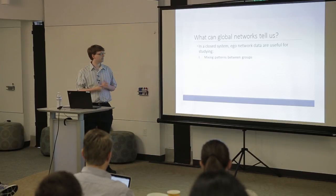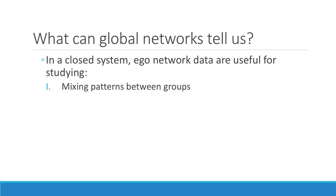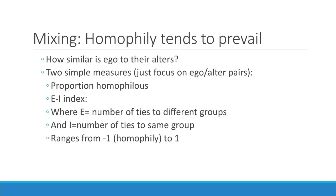What can global networks tell us that ego networks can't? They can teach us about mixing patterns between groups. Mixing is simply the degree of intermixing between people of different traits. You often see a trend towards homophily — people tend to be friends with or interact with people who are similar to them. You can measure this with the EI index, which is the proportion of ties that are different minus those that are similar, ranging from negative one to one.